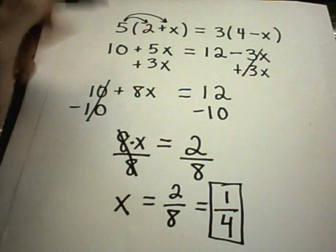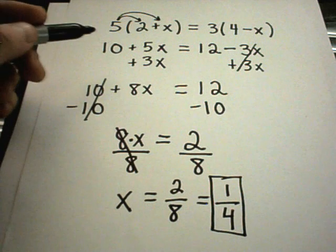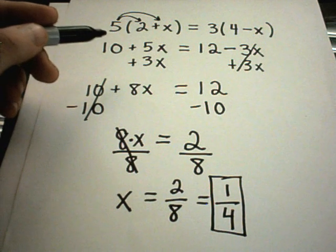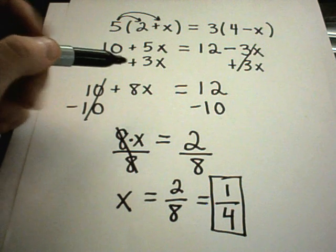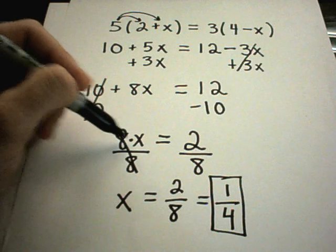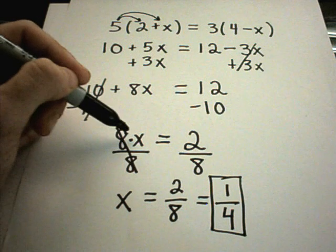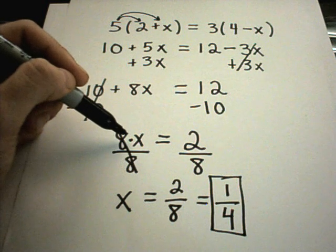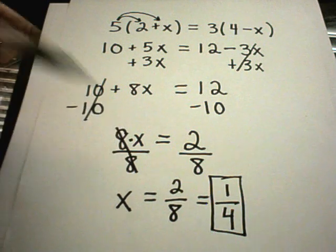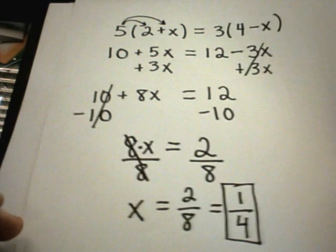So again, the basic idea: get rid of parentheses, move your x's to one side, move the numbers to the other side. If there's a coefficient on the x term, which means it's either being multiplied or divided by a number, simply get rid of that number.